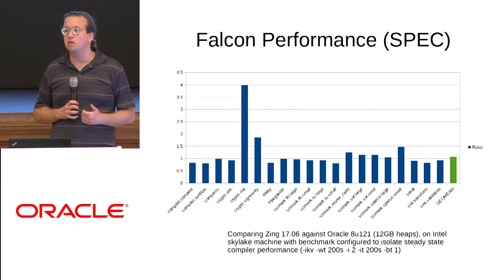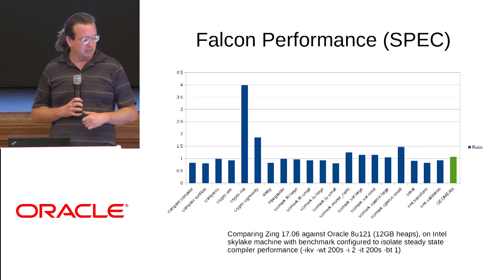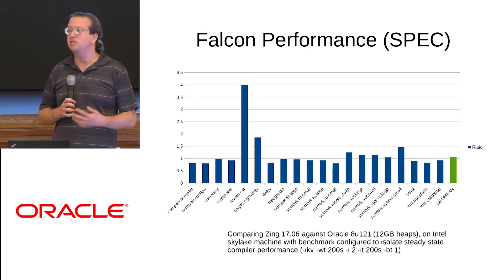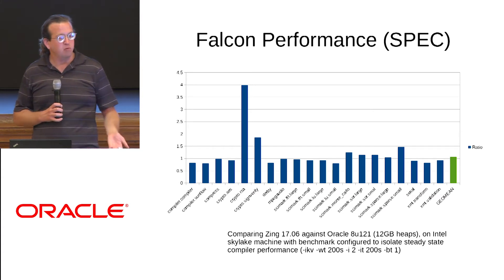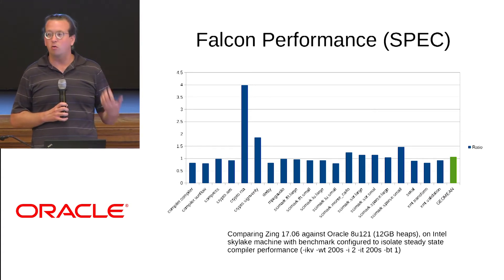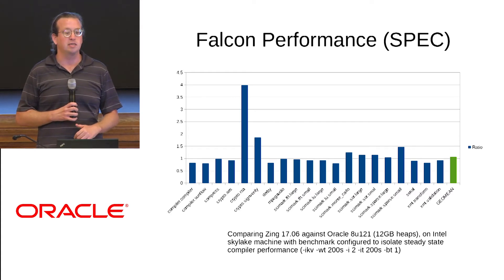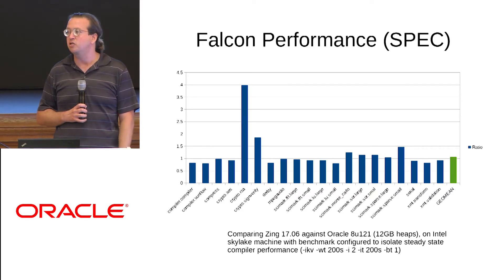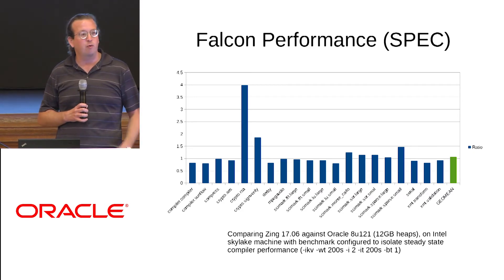The point of comparison is our current shipping product released a couple weeks ago against Oracle 8U21 with a 12-gig heap, basically so that the GCs were more or less idle. One interesting point is Oracle is running with a Stop the World collector while we're running with a fully concurrent collector. The benchmark configuration was basically to torture the compiler and get the rest of the system out of the way as much as possible.